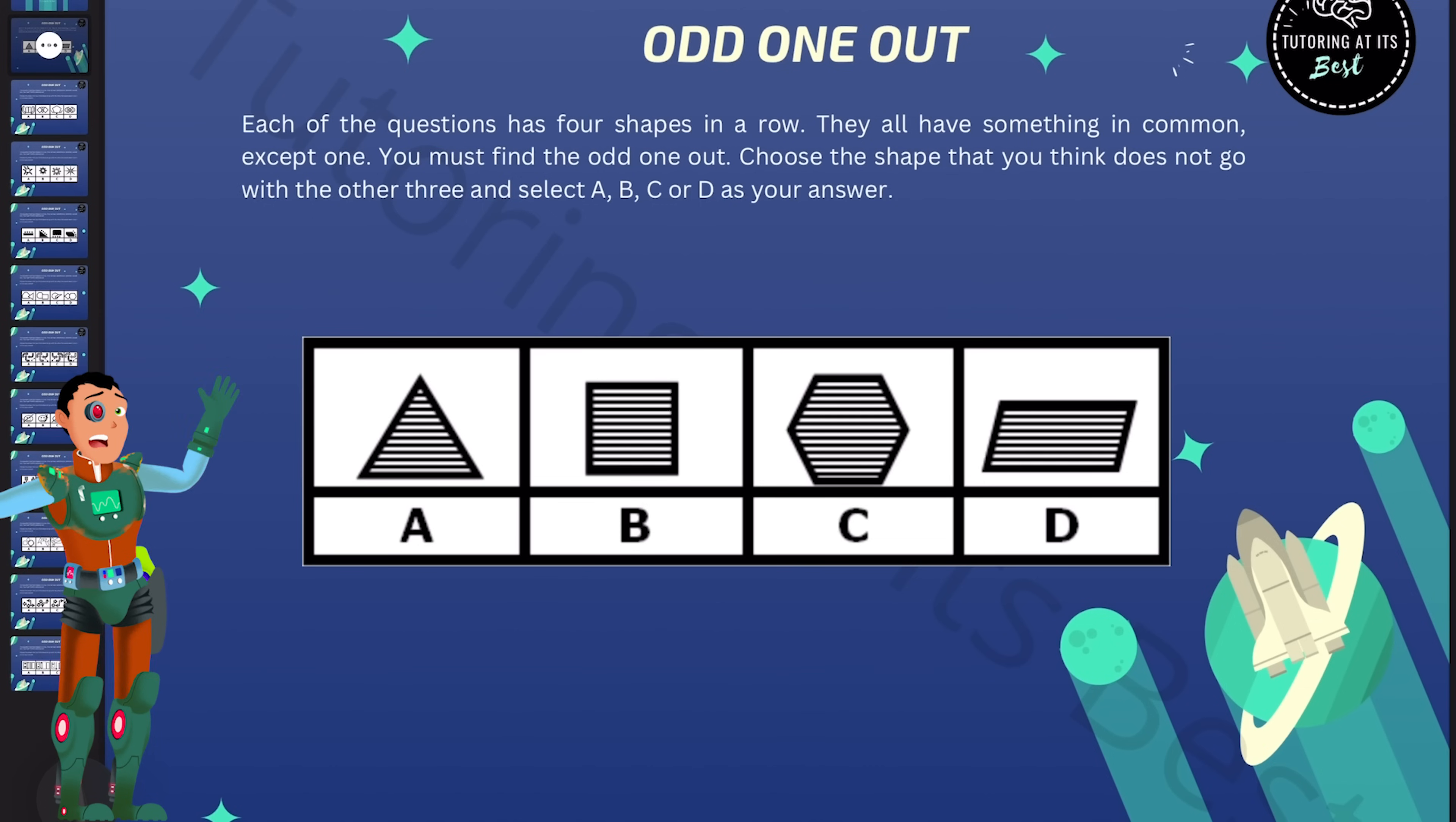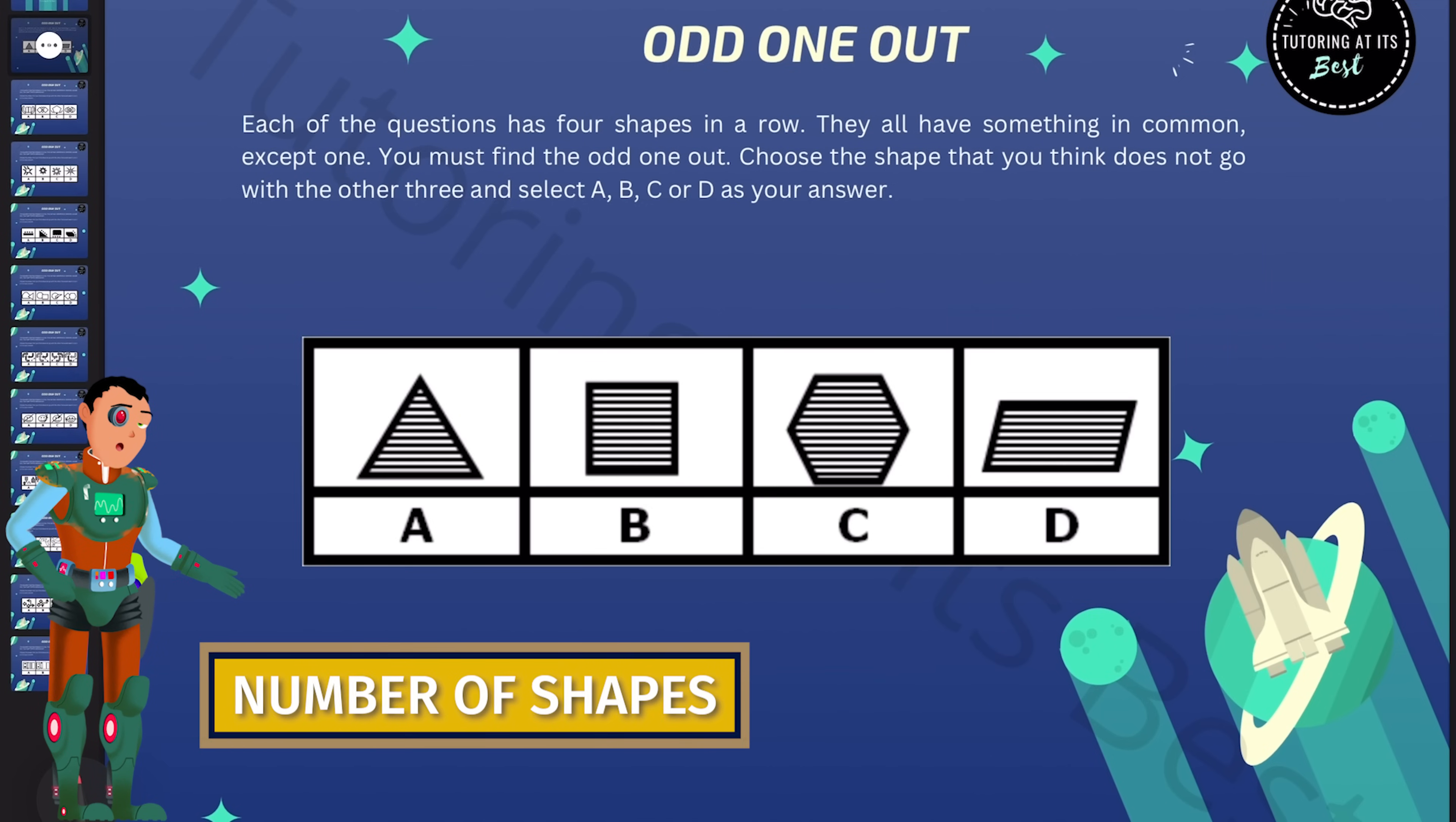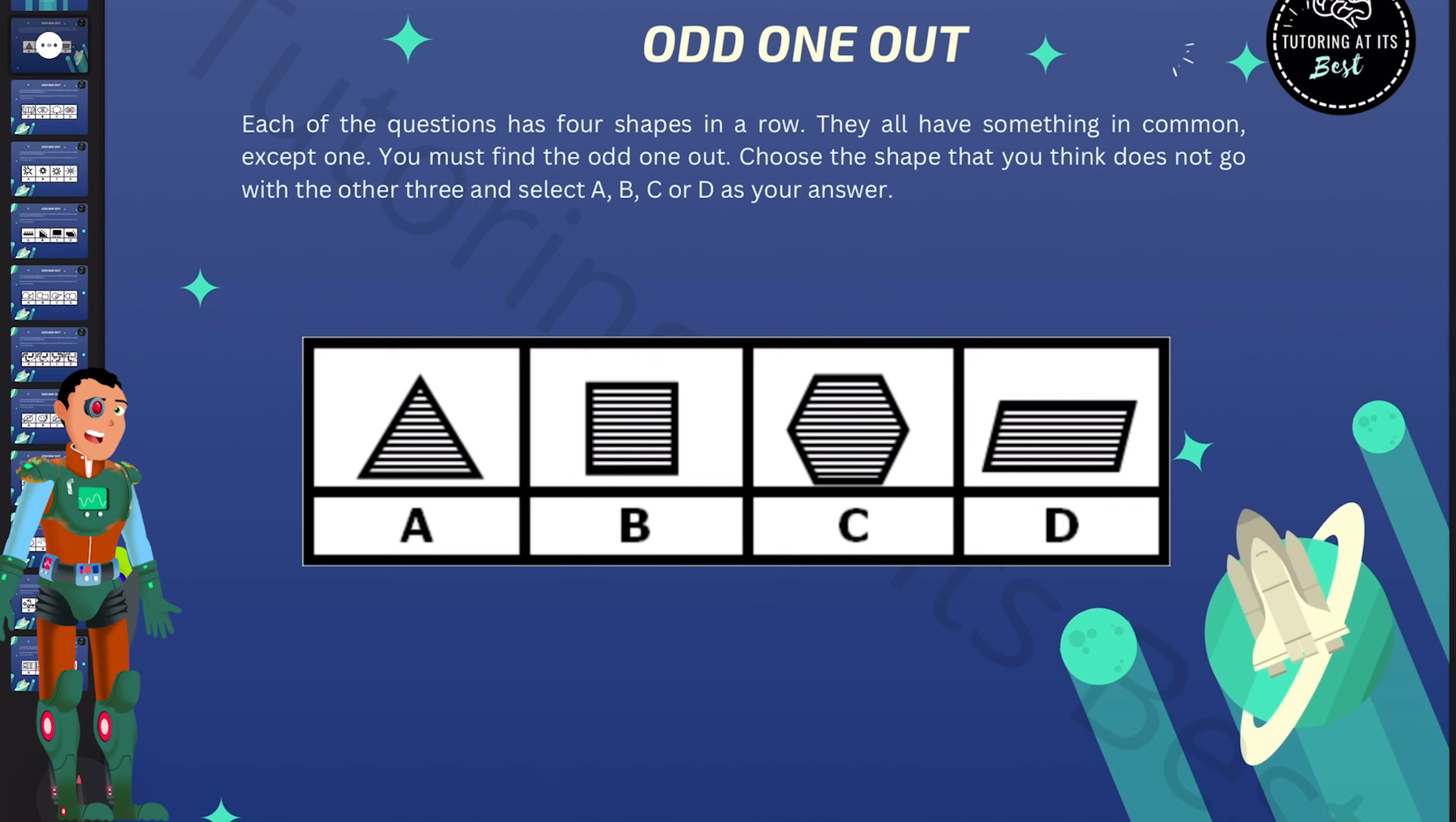Remember, the reason why a shape is the Odd One Out might be to do with its position, reflection, rotation, shading, or the number of shapes it is made of. The trick to these questions is to eliminate choices by finding more than one box which shares a feature with all the others.